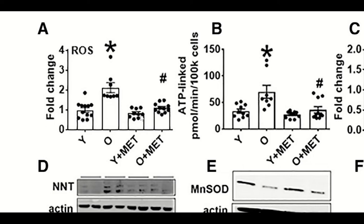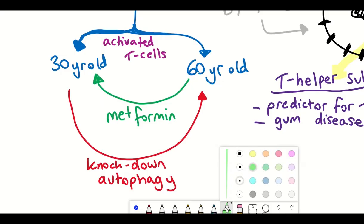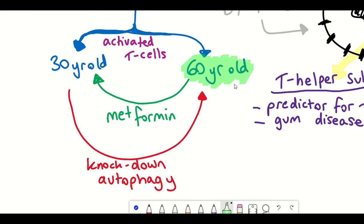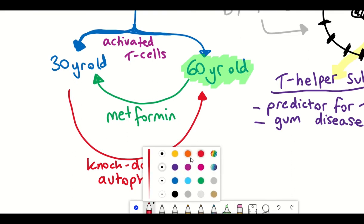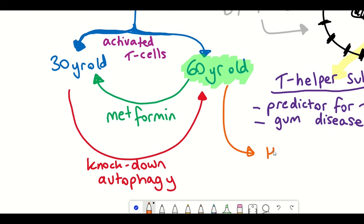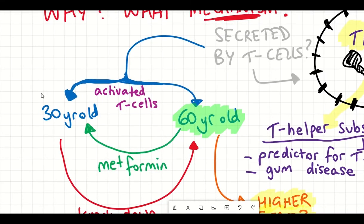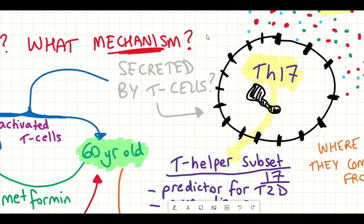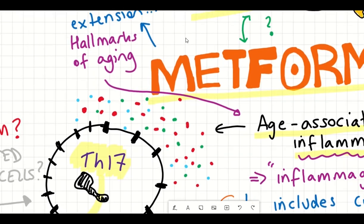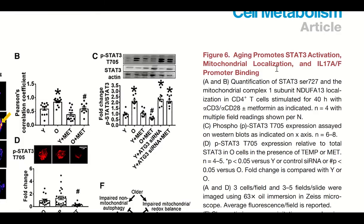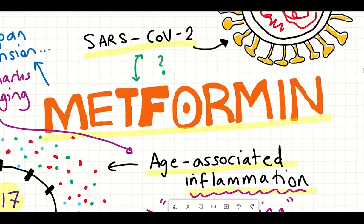To really understand what metformin is doing, a molecular underpinning to these changes is required. While this paper still doesn't find exactly what metformin is doing upstream, it identified STAT3 — a transcription factor that upregulates TH17 cytokine secretion — as a downstream signaling component of this inflammatory activation. The authors show that aging seems to promote STAT3 activation, while metformin has the effect of preventing this activation and thus also reducing the expression of these different cytokines.